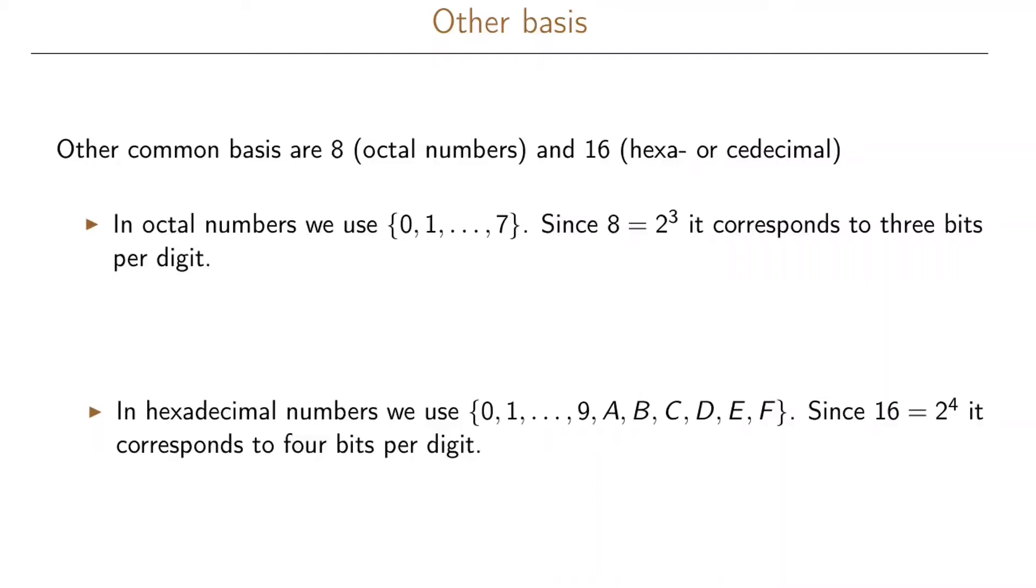Often it can be convenient to write our binary vectors in a more compact format. We can do that using for example the basis 8 which we call octal numbers or to use the basis 16 and then we call it hexadecimal numbers. For octal numbers we use the digits 0, 1, 2, 3, 4, 5, 6, 7 and since 8 is 2 to the 3 it corresponds to exactly 3 bits per digit.